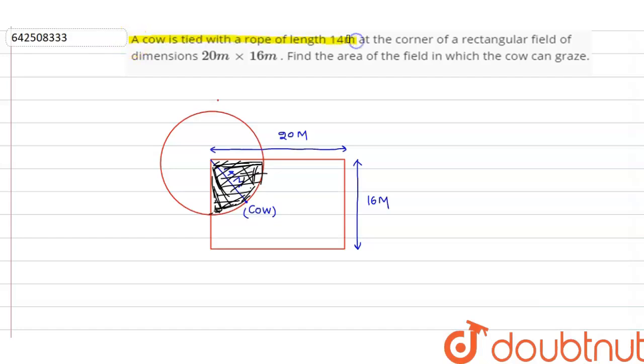tied with a rope of length 14 meters at the corner of a rectangular field of dimensions 20 meters by 60 meters. Find the area of the field in which the cow can graze. Now we need to find this area.